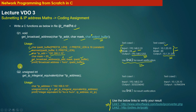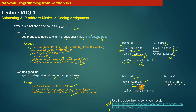In question two, you have to write a function get_IP_integral_equivalent. This function simply returns the integer equivalent for a given IP address. For example, if your input is 192.168.0.10, the function should return the corresponding integer value. You can verify your test cases using link 1.